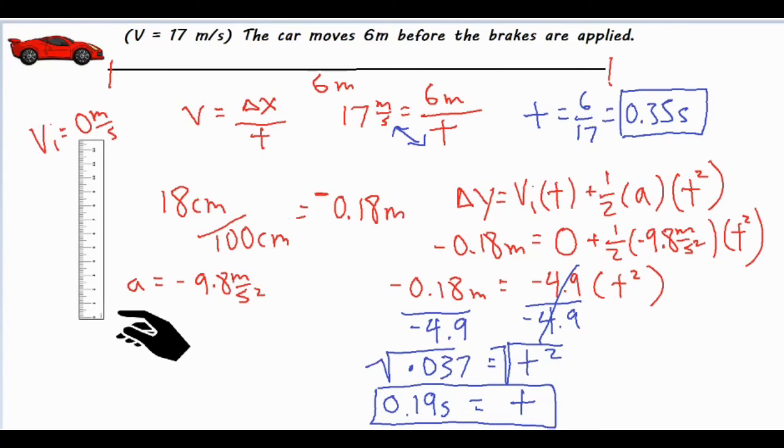All right, so we plugged in our delta y value, our displacement in the y direction, as negative 0.18 meters. We got lucky over here and we're allowed to make this zero because our vi is zero. And then plus one half negative 9.8 t squared. The one half times negative 9.8 simplified to negative 4.9. So we did our two algebraic steps, which are dividing both sides by negative 4.9, which left us with 0.037 equals t squared. Finished off by square rooting both sides, and we finished off with a final reaction time of 0.19 seconds.